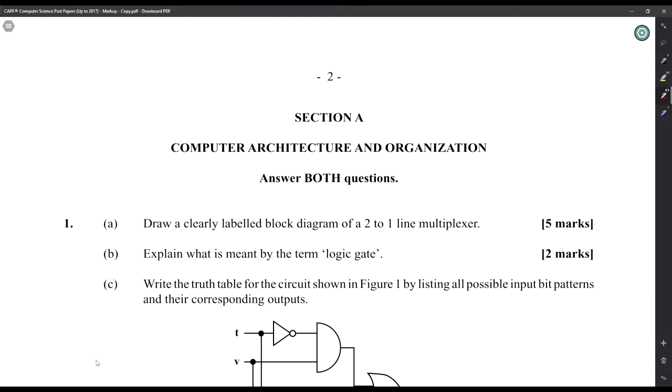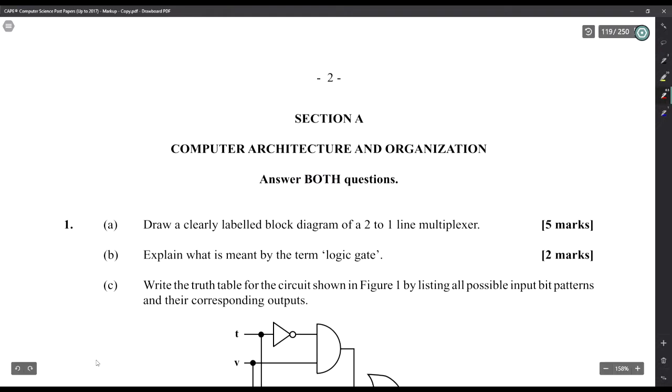Alright, number one: draw a clearly labeled block diagram of a 2-to-1 line multiplexer. Multiplexers are fairly straightforward - two inputs that give you one output, and you have the selection. So you have input zero, input one, and selection zero.